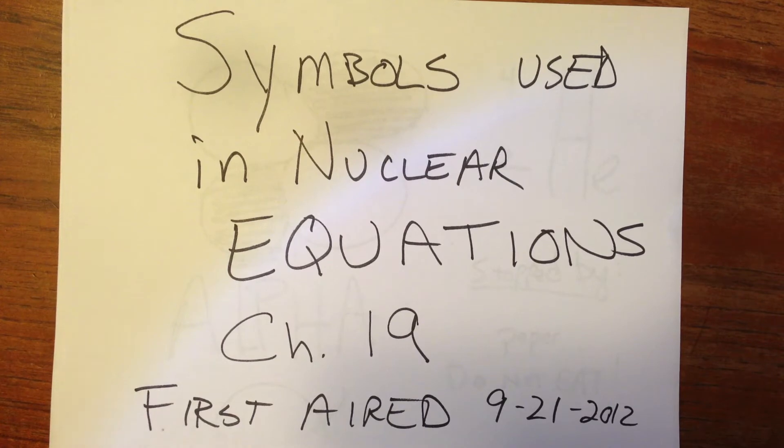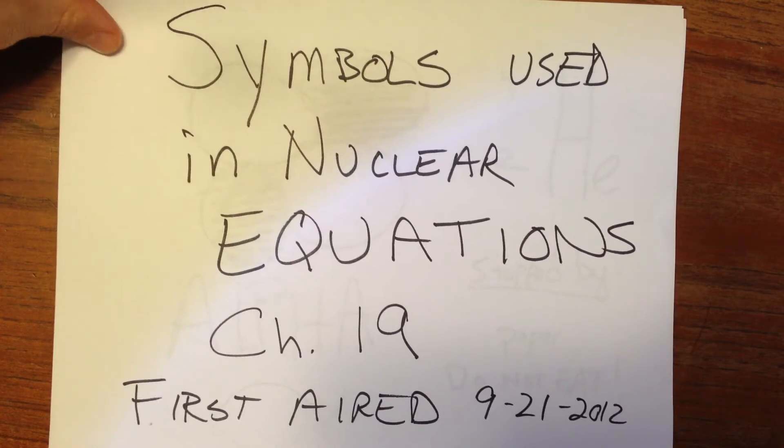We were introduced last time to some of the subatomic particles, or some of the nuclear decay particles like beta particles and alpha particles, and today we're going to talk about each one of those.